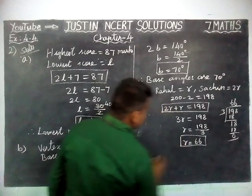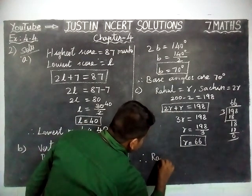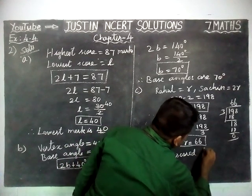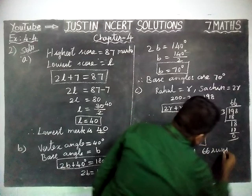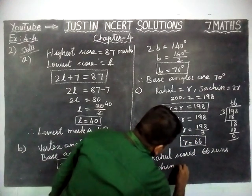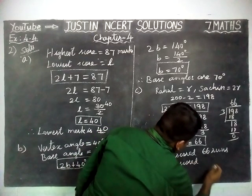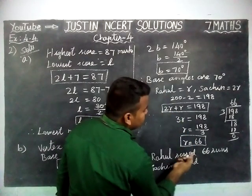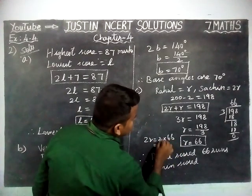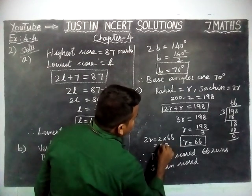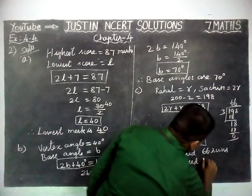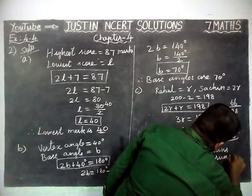Therefore, Rahul scored 66 runs. And Saurabh scored 2R. We have to multiply 2 into R: 2R is equal to 2 into 66, which equals 132. So Saurabh scored 132 runs.